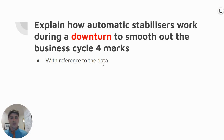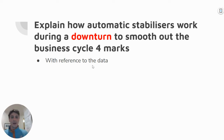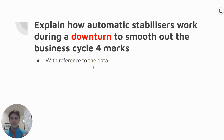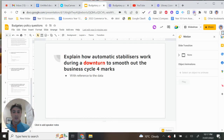Finally, what other questions could be asked? The question could change downturn to expansion, or instead of telling you it's a downturn or expansion, it could give you economic data — unemployment rate, wages, underemployment rates, GDP — and you'd have to work out how automatic stabilizers will work given that data. Your answer would be very much the same, maybe with an extra mark for referencing the data. Hopefully that helped with answering automatic stabilizer questions.